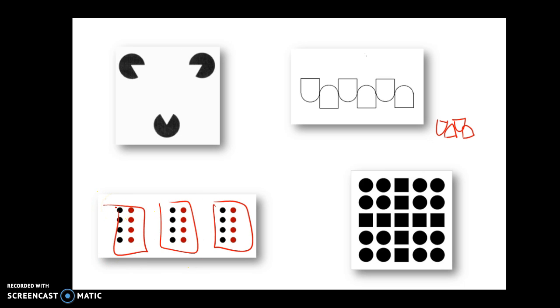And that's because of proximity, the closeness of the objects to each other. So again, we tend to see these as three distinct groups because of proximity.